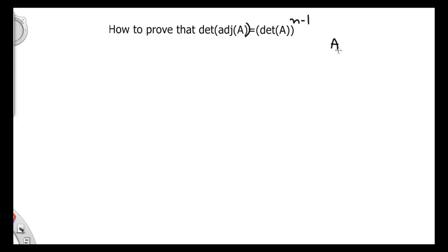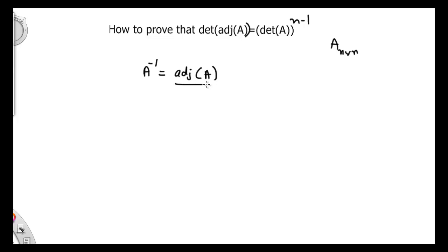Let's suppose that we have matrix A, which is n cross n, which means that it is a square matrix. And we know that in order to find the inverse of any square matrix, we use the formula: A inverse is equal to adjoint of A divided by determinant of A.